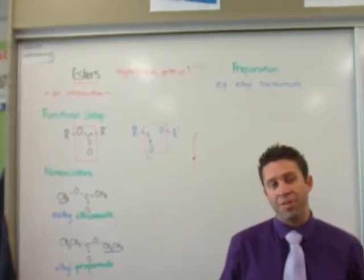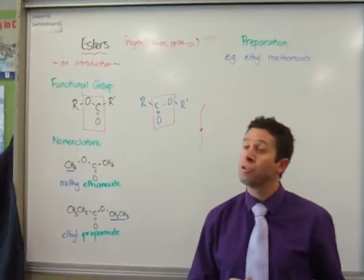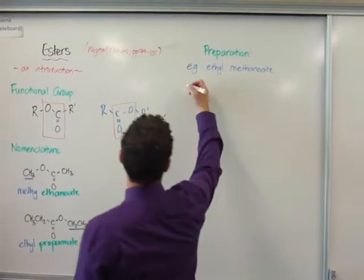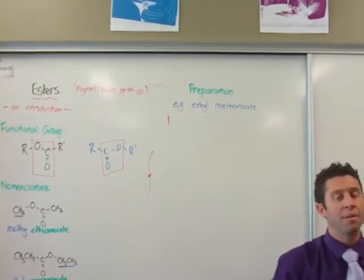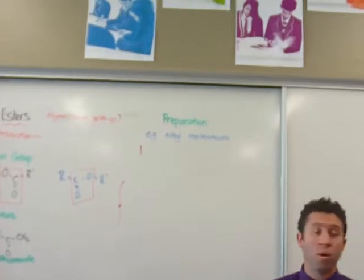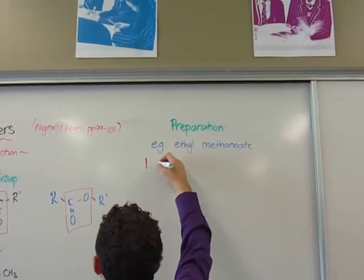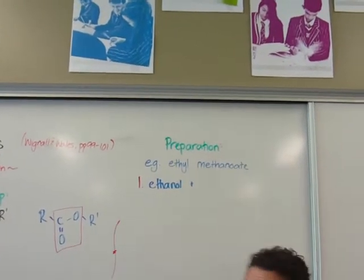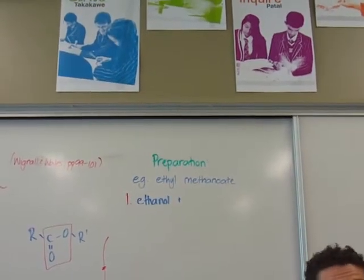So you need to know both methods. You need to know the advantages and disadvantages of both methods. So I'm going to go through both of them, starting with the acid chloride one, actually. So for this example here, ethyl methanoate. Regardless of what we start with, we're going to have ethanol from the ethyl bit. And in this case, we're going to be looking at methanoyl chloride.